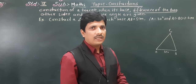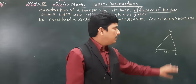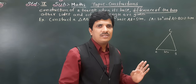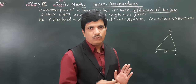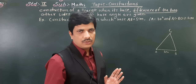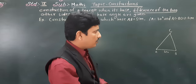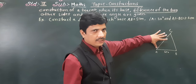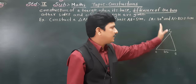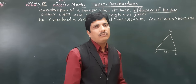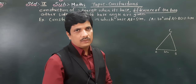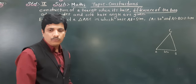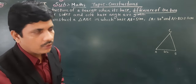In the second type, BC is greater than AC — there is a little difference in both constructions. Today we are going to see the first case, when side AC is greater than BC, and how to construct that triangle with the help of the given information.